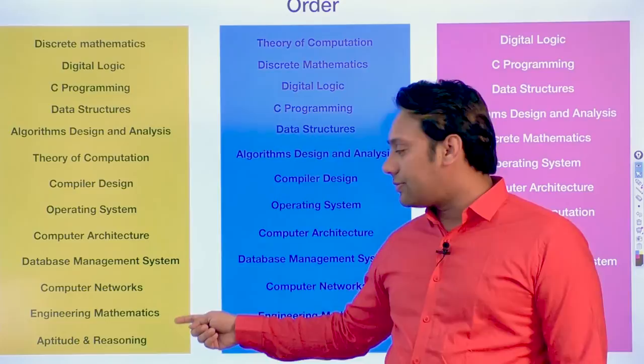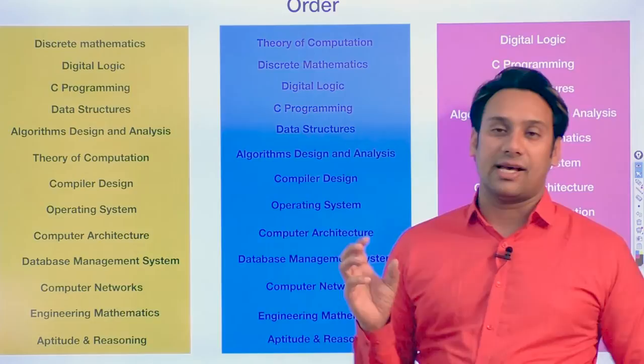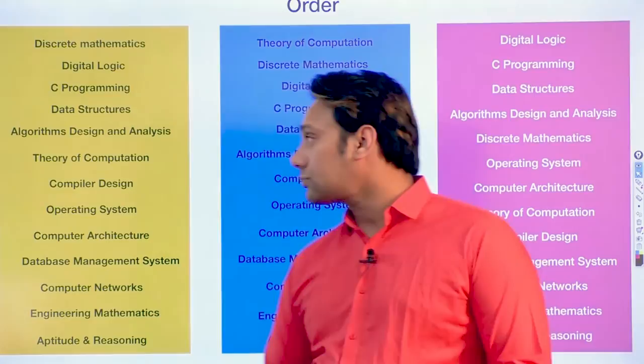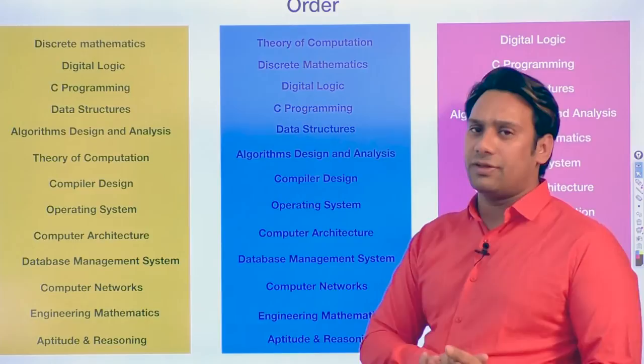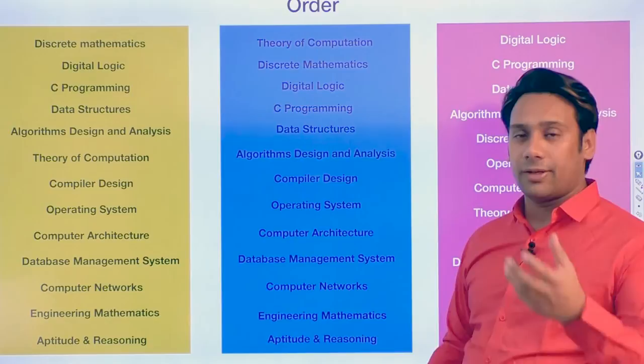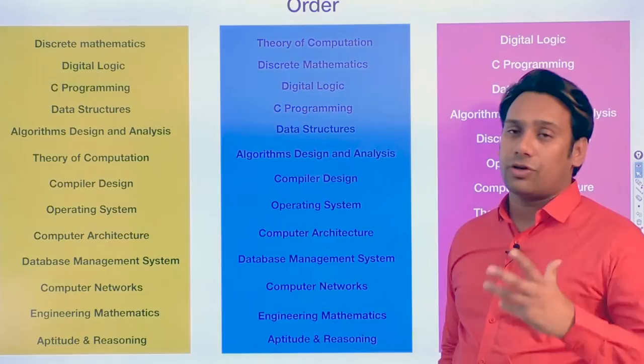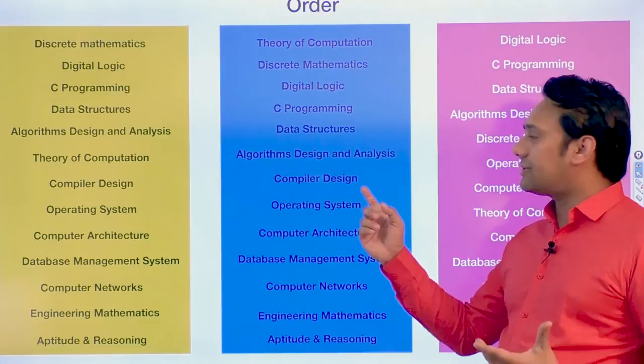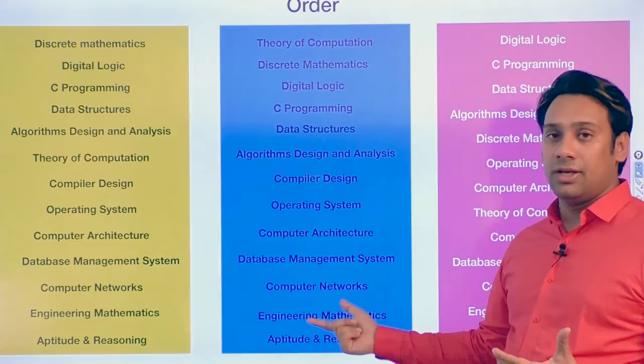Aptitude and reasoning is given last because within one week you can easily prepare for it. If you feel you do not want to start with discrete mathematics, you can also start with C programming. In that case, do discrete mathematics as a second subject — because in digital logic also, the concepts of permutations and combinations are going to be extensively used. So in that alternative order: C programming, data structures, algorithms, compiler design, operating system, computer architecture, database management system, computer networks, engineering mathematics, aptitude and reasoning. The order we are going to follow in this course starts with digital logic, then C programming, data structures, algorithm, with discrete mathematics taken in the middle.